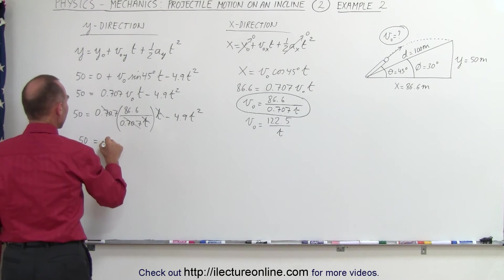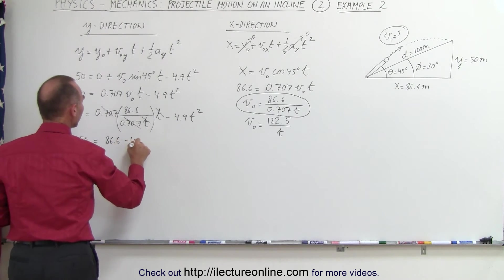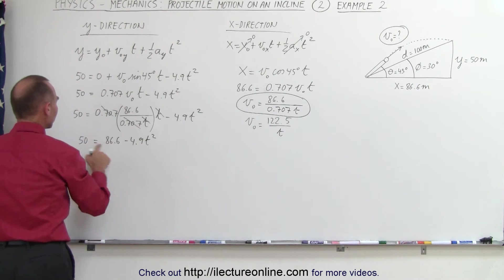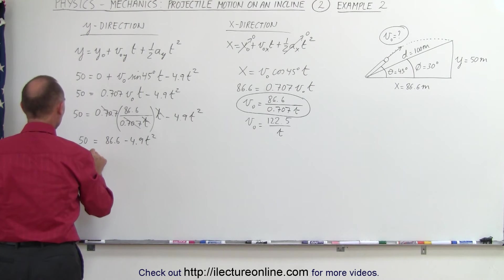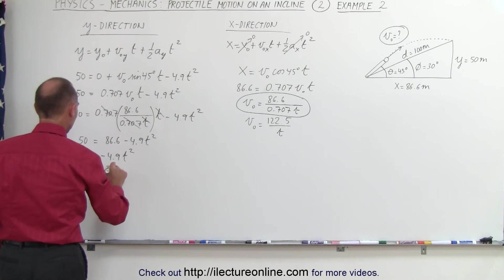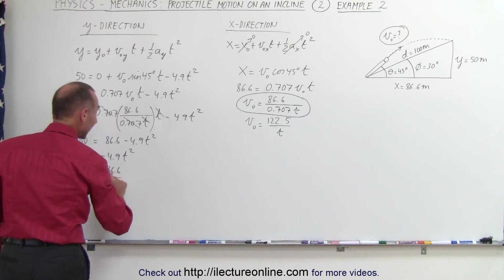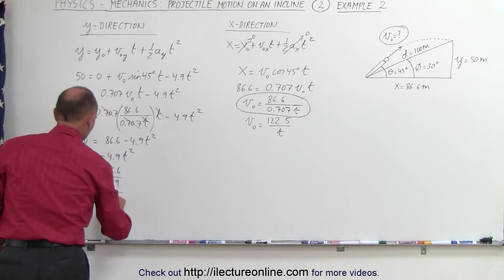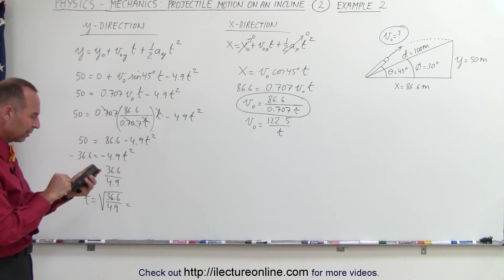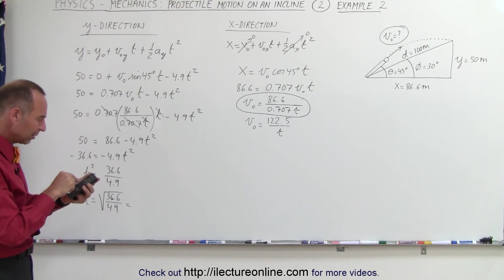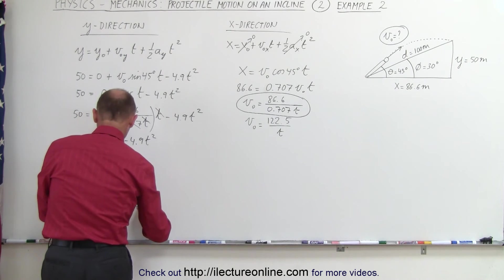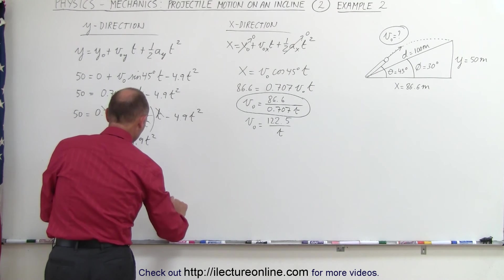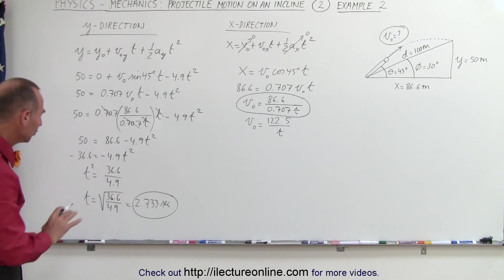50 equals 86.6 minus 4.9 t squared. Subtracting 86.6 from both sides, we get minus 36.6 equals minus 4.9 t squared. T squared equals 36.6 divided by 4.9, because we cancel both negative signs. So t equals the square root of 36.6 divided by 4.9, which gives us 2.733 seconds.